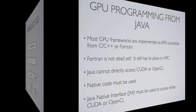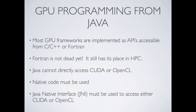CUDA and OpenCL are both implemented as APIs accessible from C++ or Fortran. Fortran is not dead by any stretch of the imagination — it still has its place in high-performance computing and will even outperform C in certain cases. Java cannot directly access CUDA or OpenCL; native code must be used. JNI is used to access these, and one great thing about LWJGL is that it completely encapsulates the JNI you would otherwise have to use to access the underlying OpenCL.